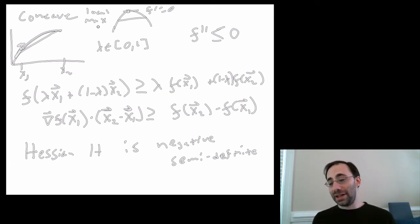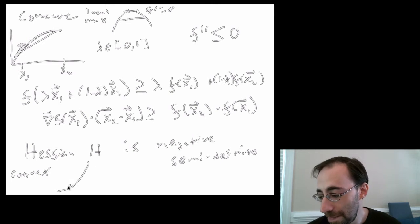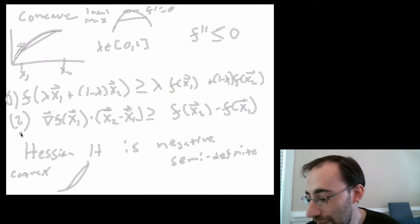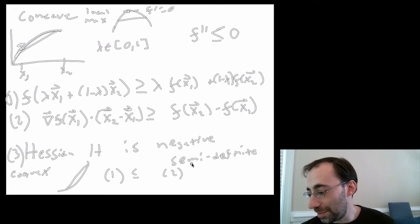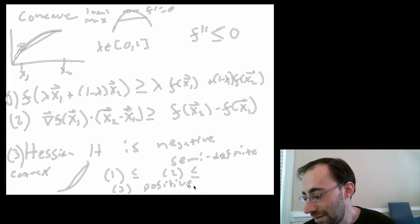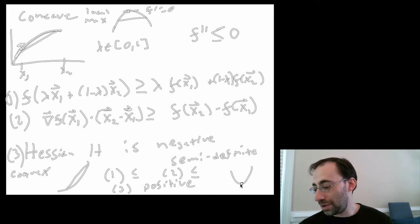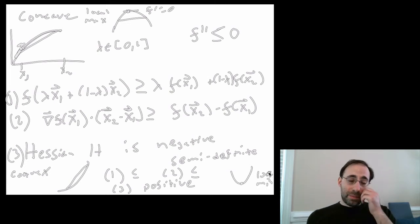That's concave — there are multiple equivalent definitions. For convex, you just flip the signs. In definition one, you flip the inequality. In definition two, you flip the inequality. In definition three, you have a positive semi-definite Hessian instead of negative. A locally convex function that has a critical point would have a local minimum.